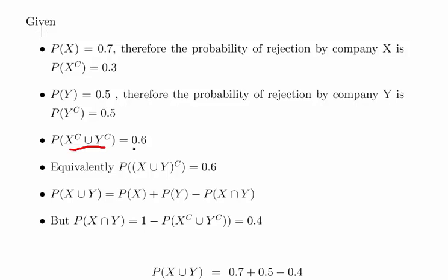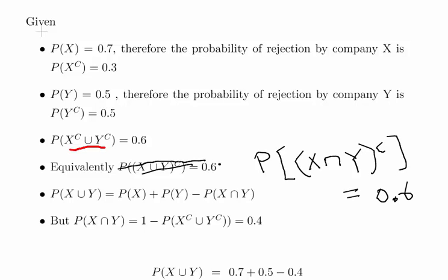A quick pause to actually just correct that. That should say the probability of X intersection Y, complement of that, is equal to 0.6. So I have a union there but actually I should have an intersection symbol there. So we're back on track there, using those identities that I've used previously.